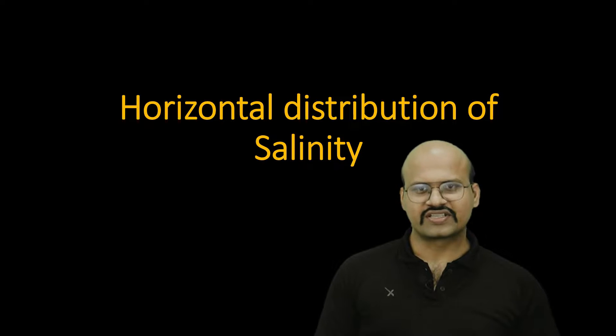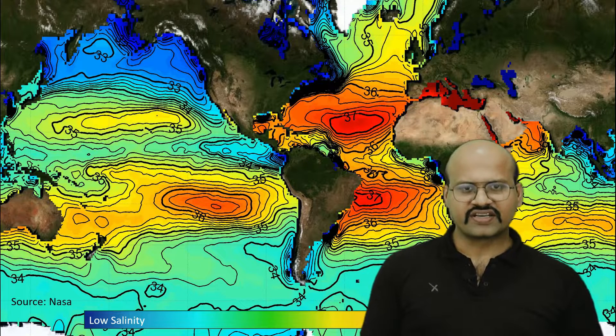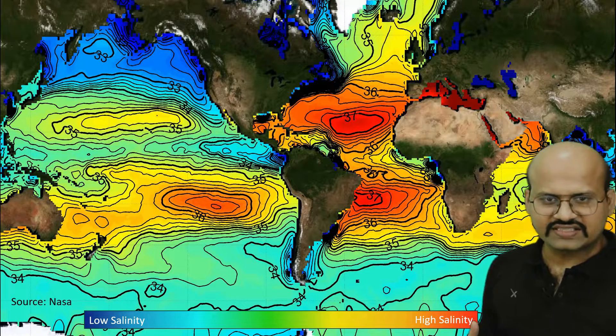Let's see the horizontal distribution of salinity first. Here is an image by NASA which gives salinity variation of ocean waters across the world. We can see the color scale used by NASA: red color shows areas of highest salinity, while blue color shows areas of lowest salinity. If we look at the map, we can see the regions with highest salinity.